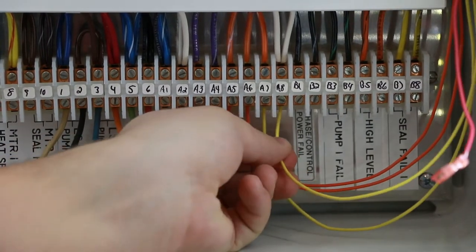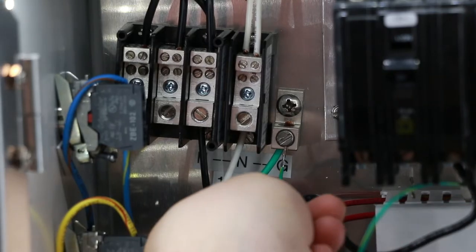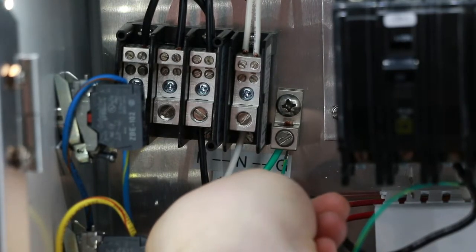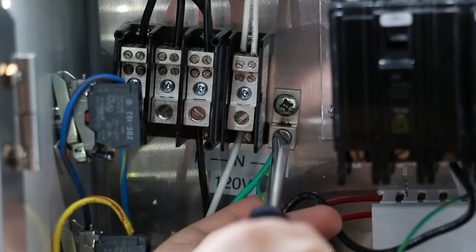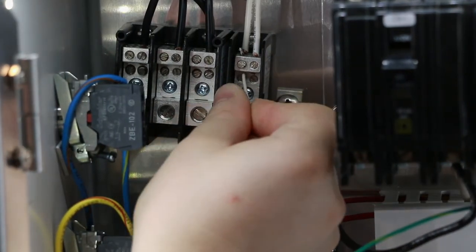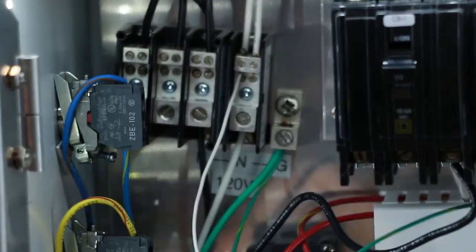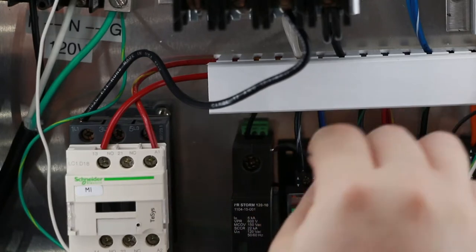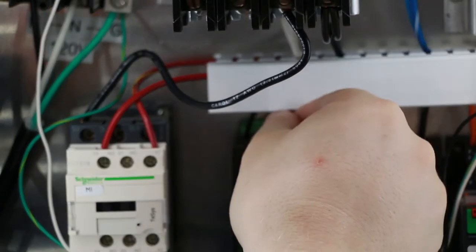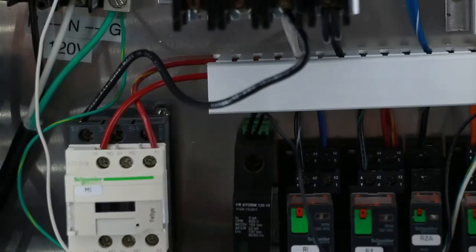The two yellow alarm leads should be connected to a powered contact. Now, land the green wire on your panel ground. Land the white wire on the panel neutral, and the black lead on your 120-volt source. Here, I'm using the lightning arrestor to protect my OmniBeacon from voltage spikes.